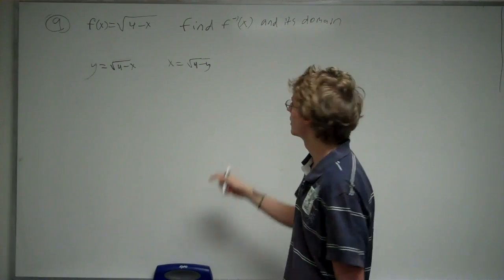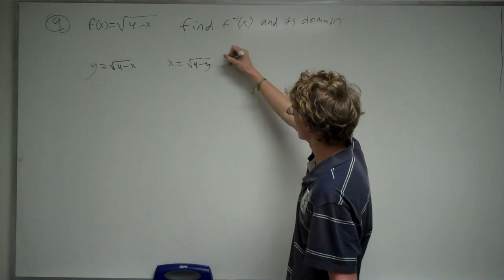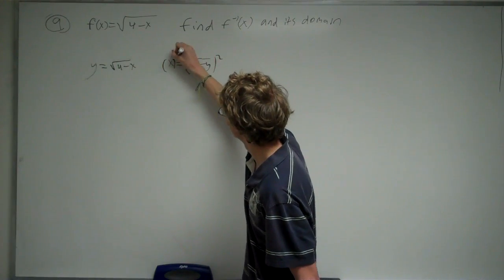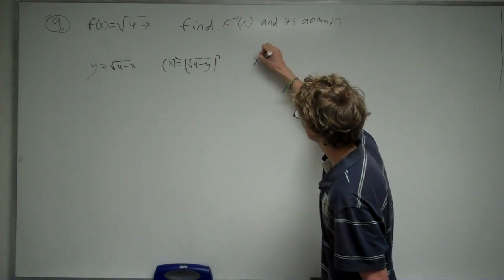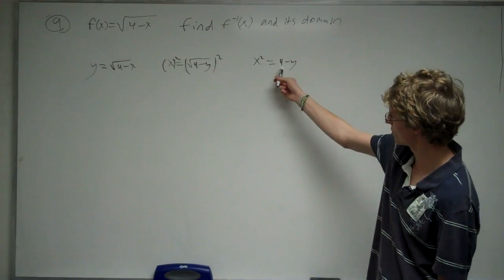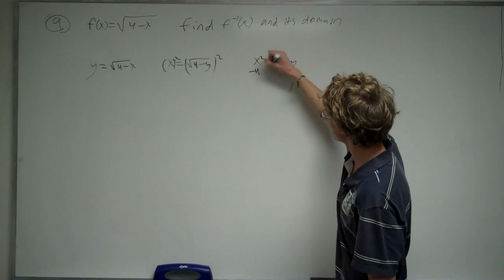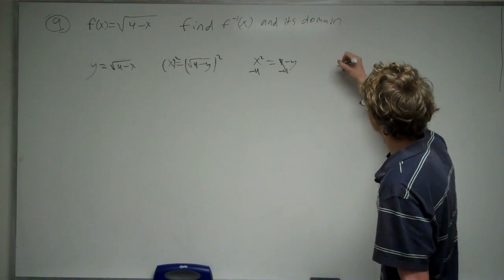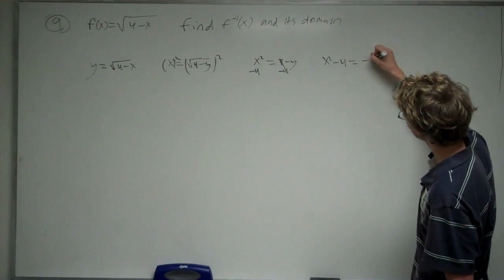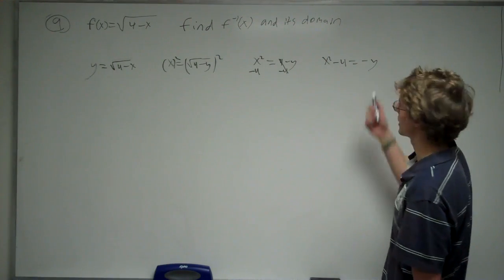And now you want to solve for y, so to do that you're going to square both sides to get rid of the radical here. x squared equals 4 minus y. Now you want to subtract 4 onto both sides, get rid of the 4 here. And now you want to multiply both sides by negative 1 to get rid of the negative in front of the y.